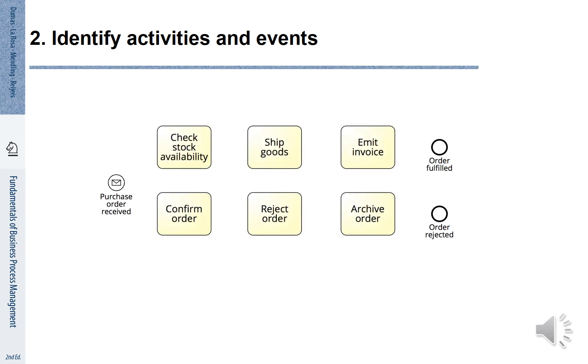There are different activities in between. We need to check stock availability. We need to confirm the order. We need to ship the goods. We may reject the order. We need to emit the invoice. And we archive the order.